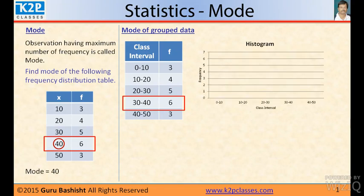So make a histogram. What is histogram? Histogram is a rectangular diagram, bar diagram of class interval and the frequency. Like class interval is 0 to 10 is 3, so you will make 0 to 10 is 3. So in x-axis it is class interval, in the y-axis it is frequency.